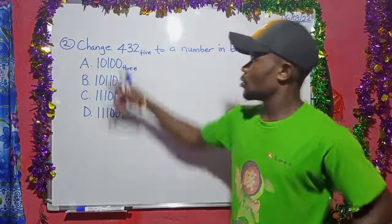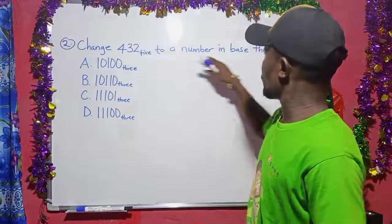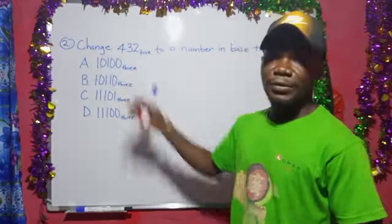Okay, welcome to question number two. Change 432 base 5 to a number in base 3. These are the options.